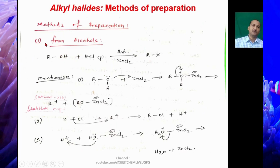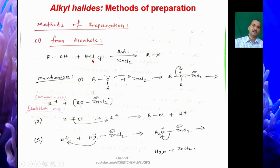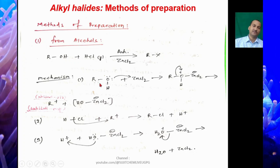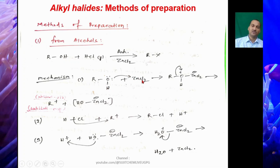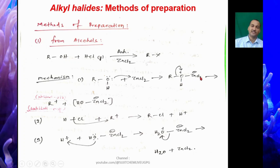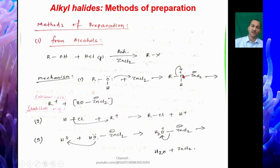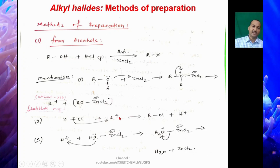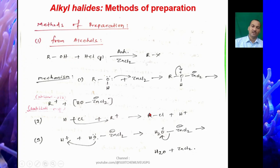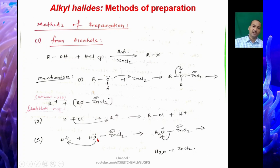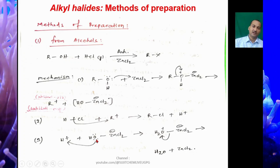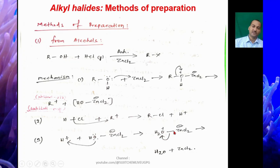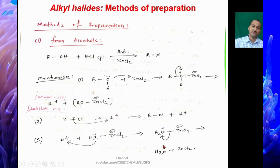We can prepare alkyl halides from alcohols. ROH reacts with HCl in the presence of anhydrous zinc chloride to give RX. The mechanism: the oxygen lone pair of ROH attacks ZnCl2 as a nucleophile, forming ROH·ZnCl2. The R–O bond breaks, generating a carbocation R+ plus HOZnCl2−. R+ then takes Cl− from HCl to give RCl plus H+. The lone pair of oxygen in HOZnCl2− attacks H+ as a nucleophile, and the Zn–O bond breaks, regenerating water and ZnCl2.